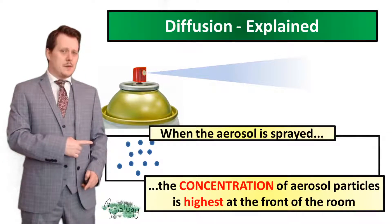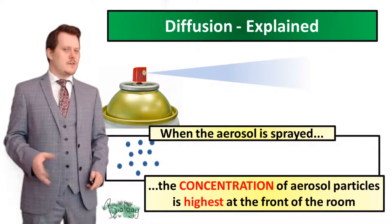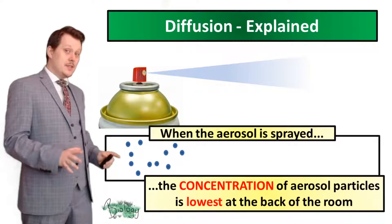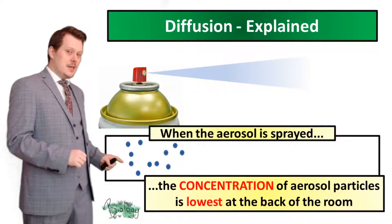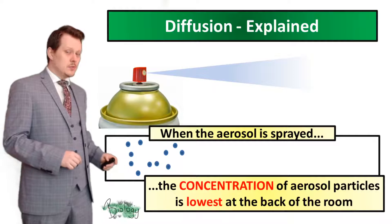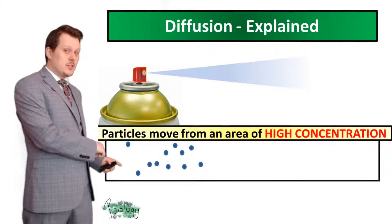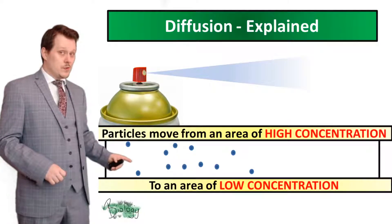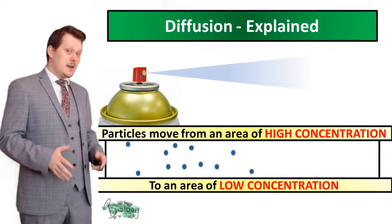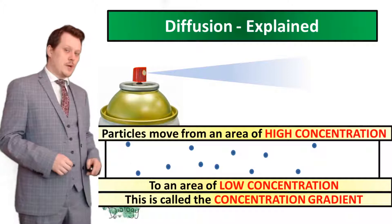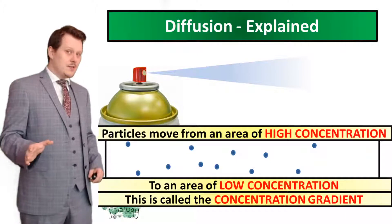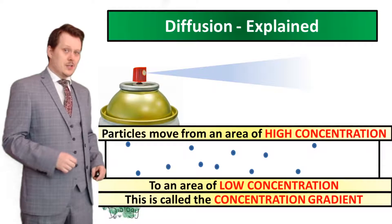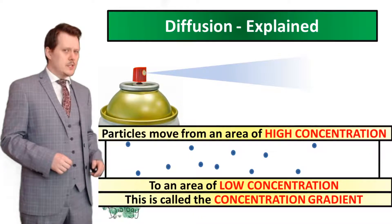Looking at the other side of the box, you can see that the concentration of the aerosol particles is the lowest at the back of the room. Diffusion is the movement of these particles from an area of high concentration to an area of low concentration — from the front of the room to the back — and it moves down something called the concentration gradient. This is the difference in concentration between the area of highest concentration and the area of lowest concentration.